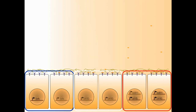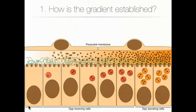The cells that are farther away will express Brinker, which is the negative regulator of the pathway, and the ones closer will express different sets of genes that will produce the other structures. It's important to know that such a tightly regulated process needs a tightly regulated gradient. There are many models to explain how this gradient is established in the imaginal disk — the first is expansion-repression by Benny Shilo, but the evidence for this in the wing disk is not that strong.